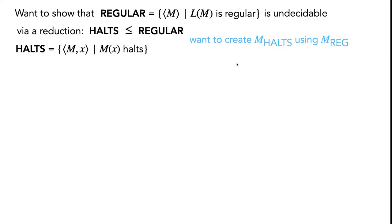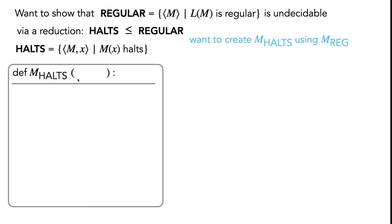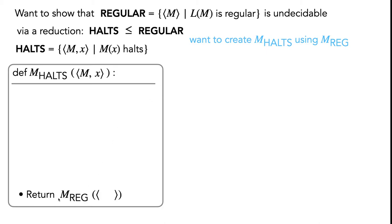Let's get started on defining the decider Turing machine mHALTS. We know it's going to take in an input string, and based on the definition of HALTS, the type of that string is going to be the encoding of a machine and its input. We also know that somewhere in the construction of this machine, we're going to be using the decider Turing machine mReg. For this problem, we'll see a common pattern: we'll often just return whatever that given decider Turing machine returns.